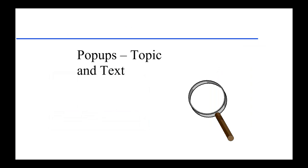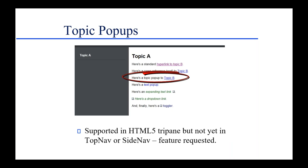Moving on to pop-ups — two kinds: topic pop-ups and text pop-ups. Here's a topic pop-up: when the user clicks on it, it pops open a window that sits on top of the current topic. Rather than taking you from topic A to topic B, it brings topic B to you in a smaller window above topic A, so users can see their starting point and their target. Topic pop-ups have been with Flare since the beginning and work like a charm, but only for HTML5 tri-pane output — they don't yet work in the top nav or side nav skins.